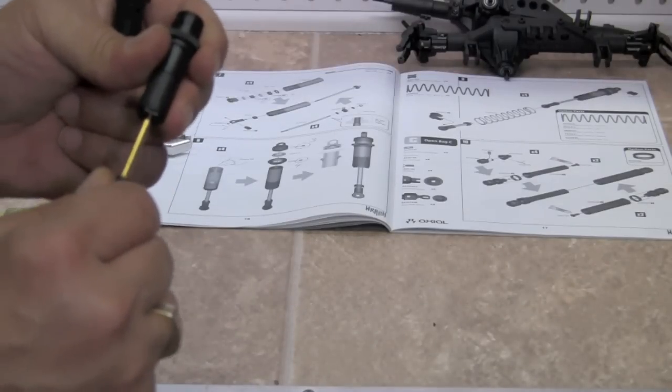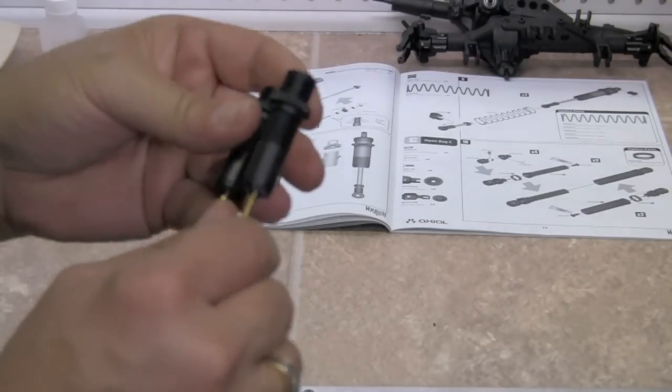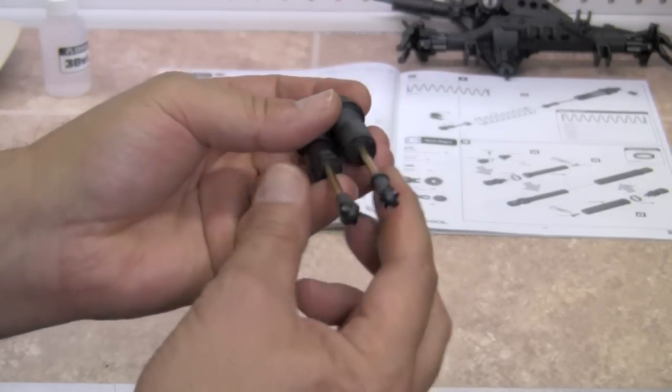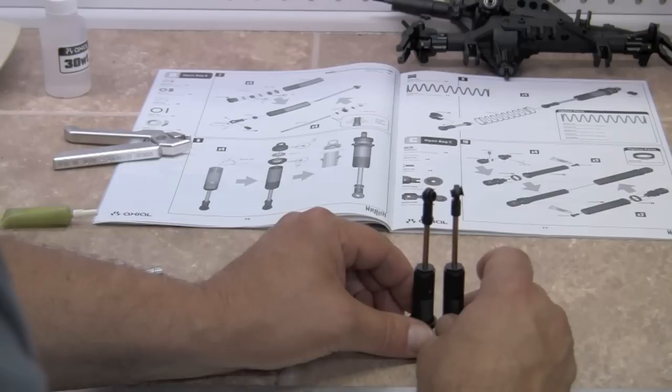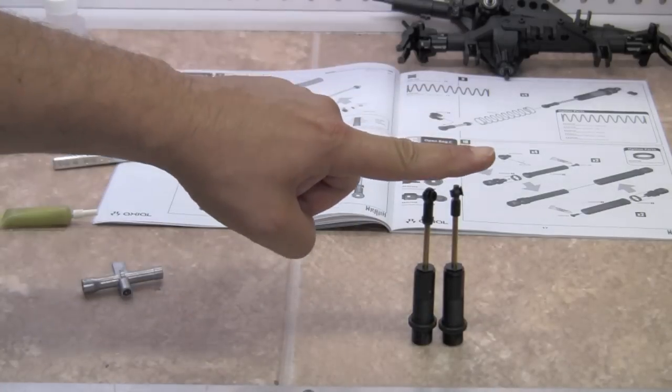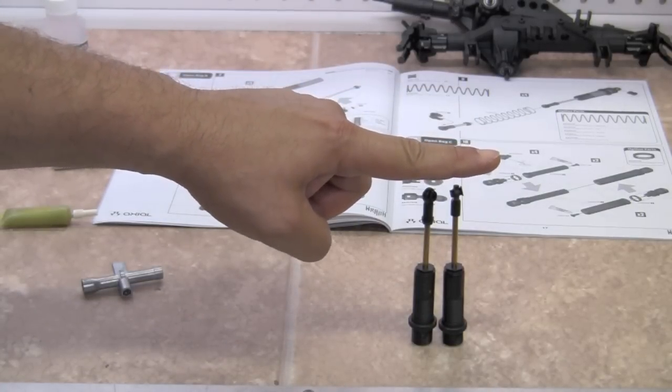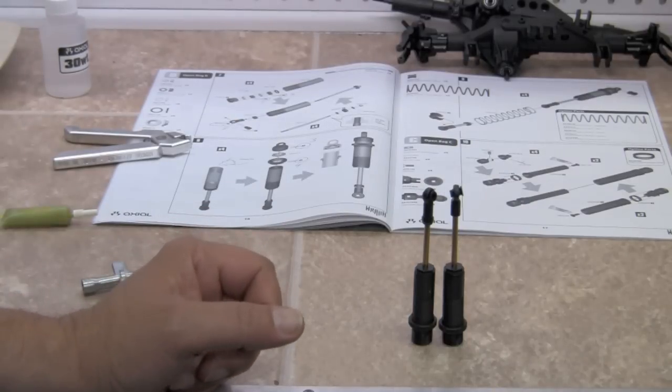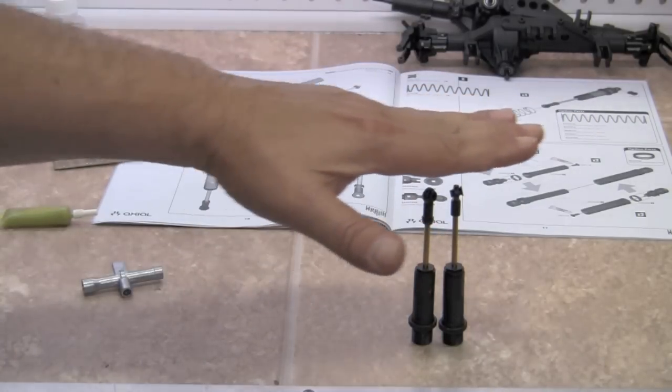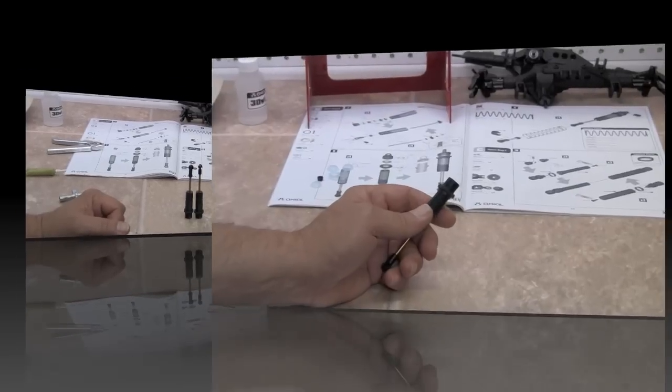The last thing we're going to do is once you get all of your shocks built, we're going to make sure that they all measure out and are the same length. And when I say that, we're going to set them down, and we're going to look at the length of the shafts and the rod ends. Sometimes they're not even, and you want to make them so that they're all the same length or the same height when they're fully extended.